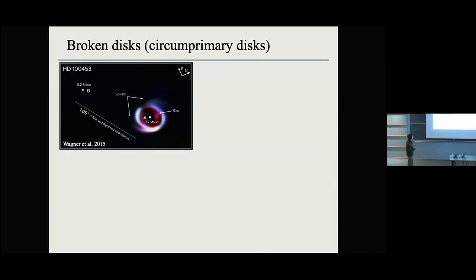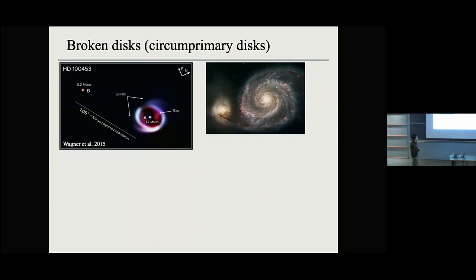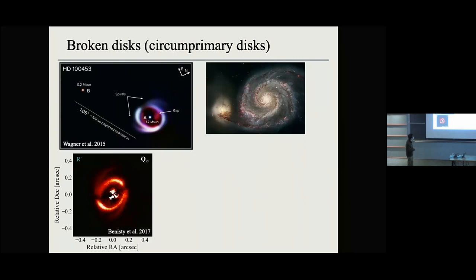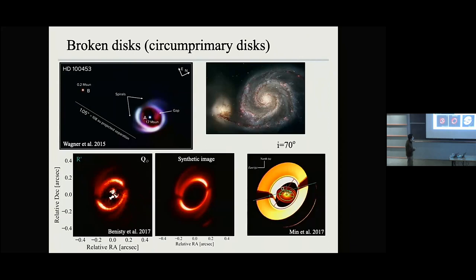Another example is HD 100453. In this case, again, you have a low-mass companion around another star and a nice circumprimary disk — a mini disk around one star. You see these spirals, but that's not the surprising thing; if you're from the galactic community, you know a satellite can induce spirals. What's surprising is that for this circumprimary disk, it also has a shadow. If you try to fit these shadows, you get a 70-degree misaligned inner disk casting a shadow on this circumprimary disk. So you have a broken disk around the circumprimary disk — could there be another companion in this disk to break it? We don't know.